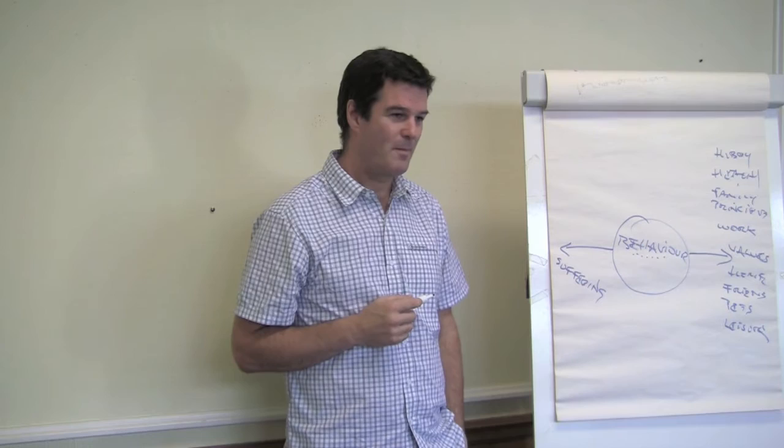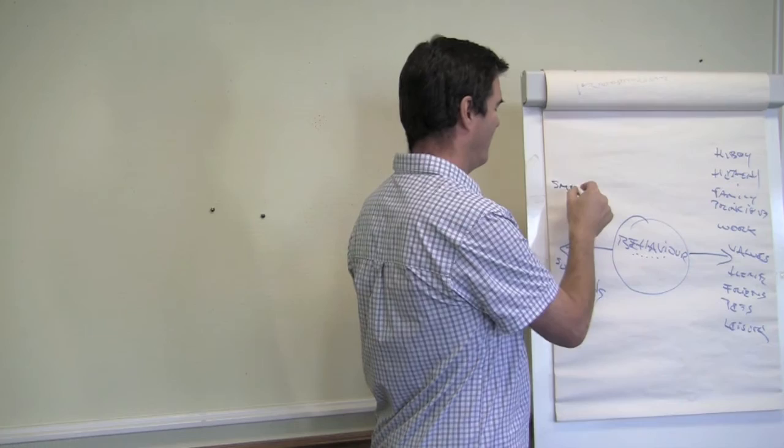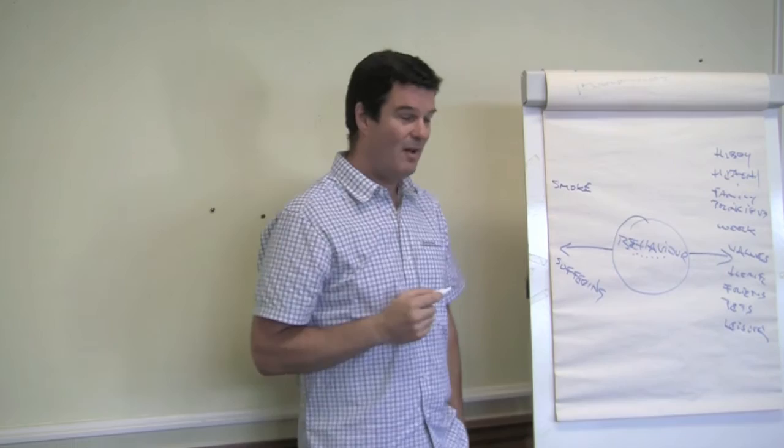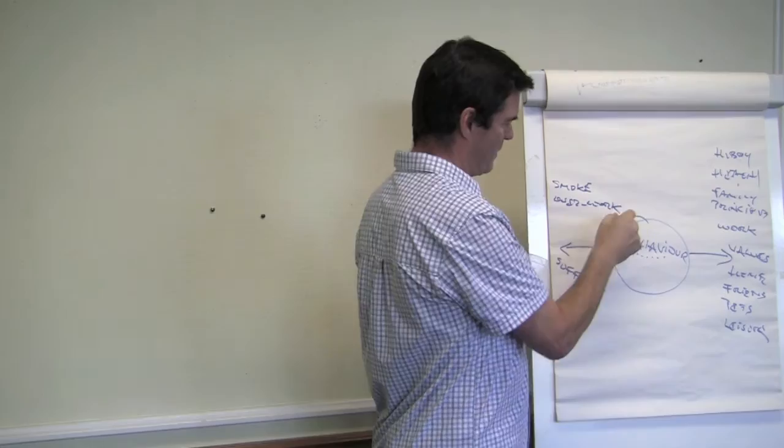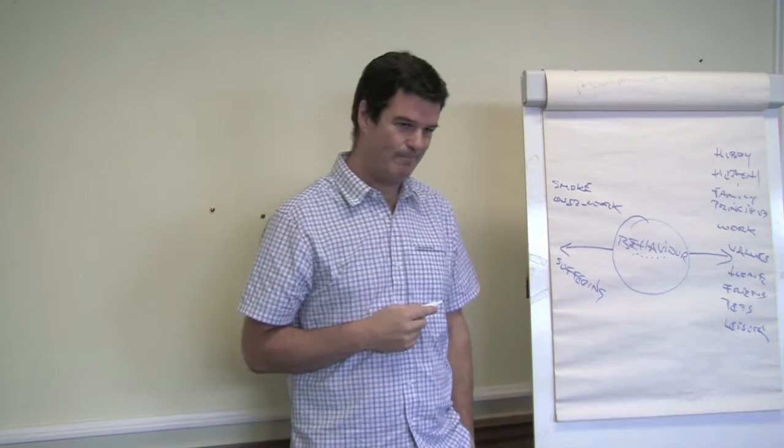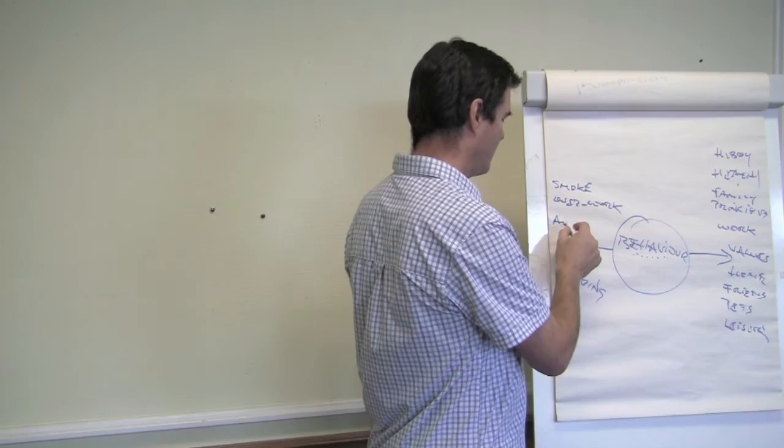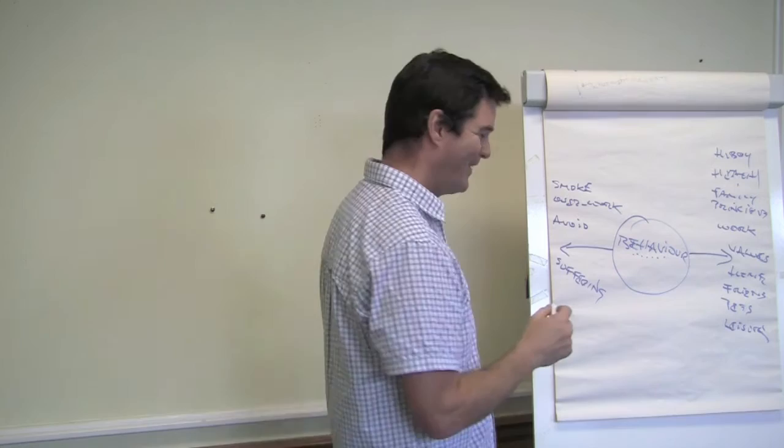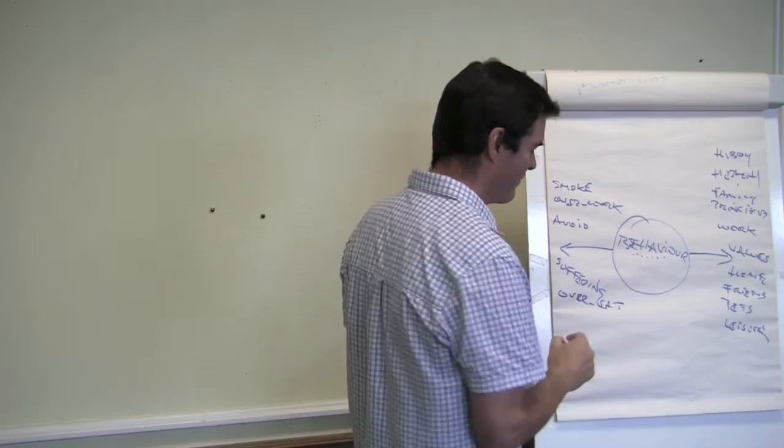For me, continuing to smoke. Okay. Overworking. Although work's important, one of my values, right? It stops being valued when you overwork and it starts to turn into suffering. Avoiding things. Overeating. Chocolate. It can be on both sides.